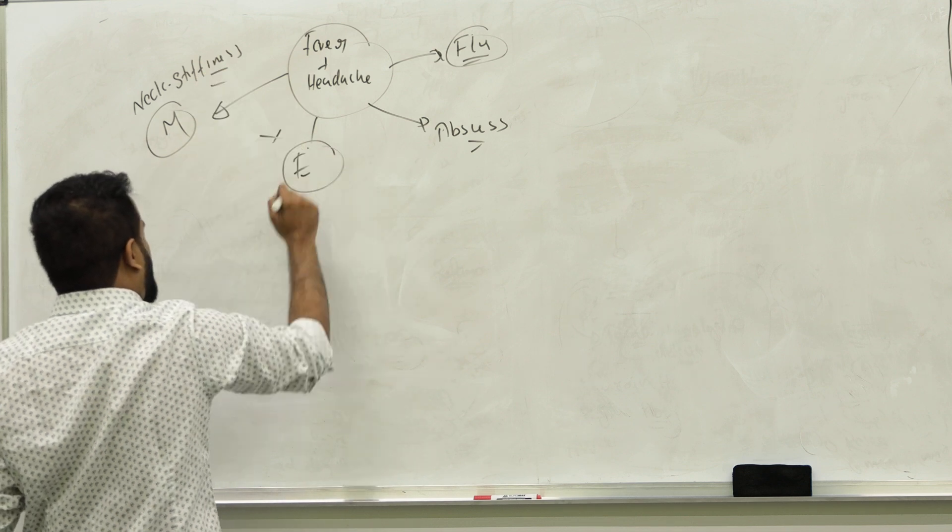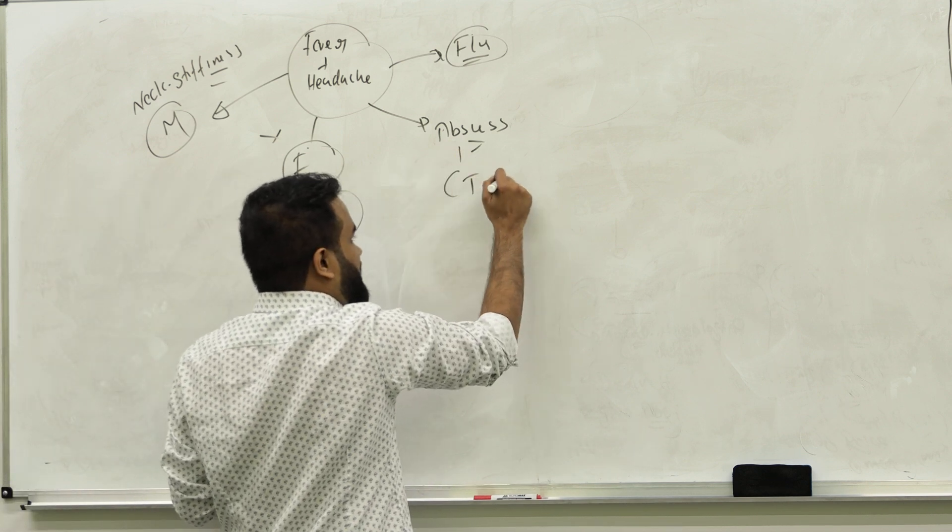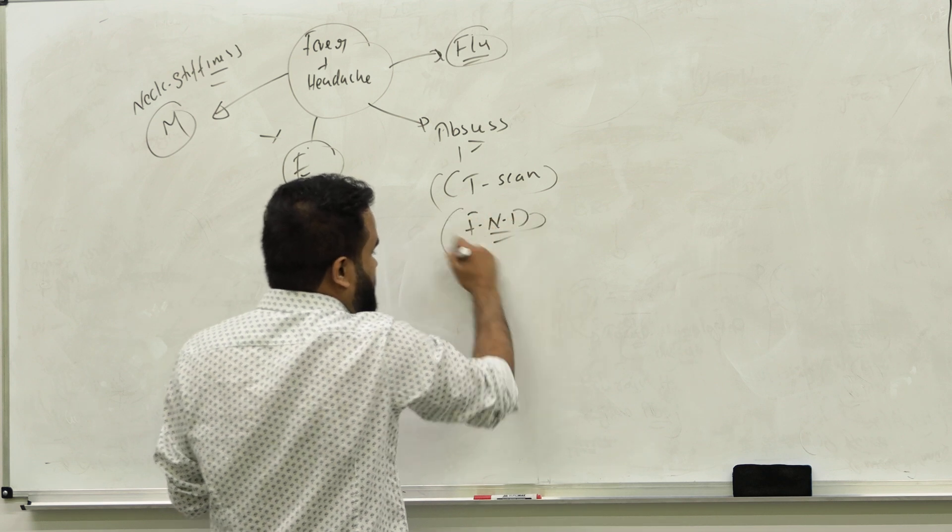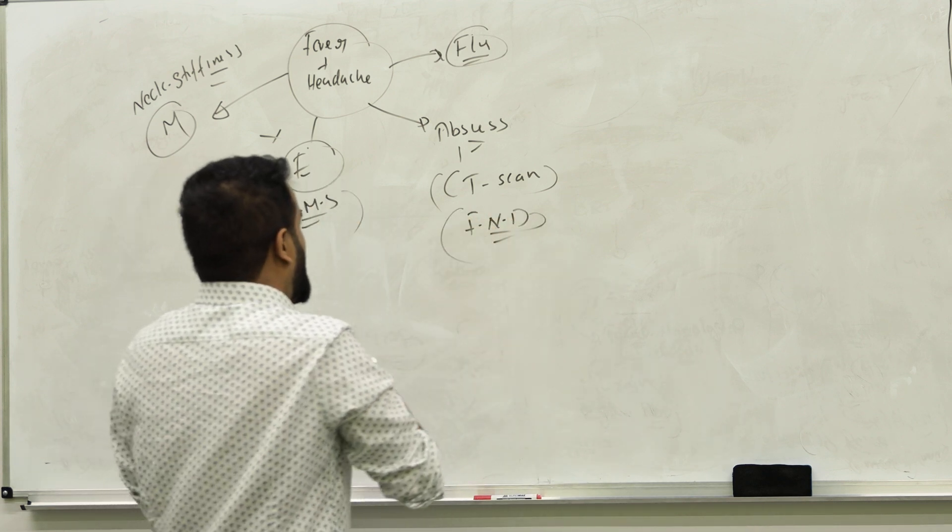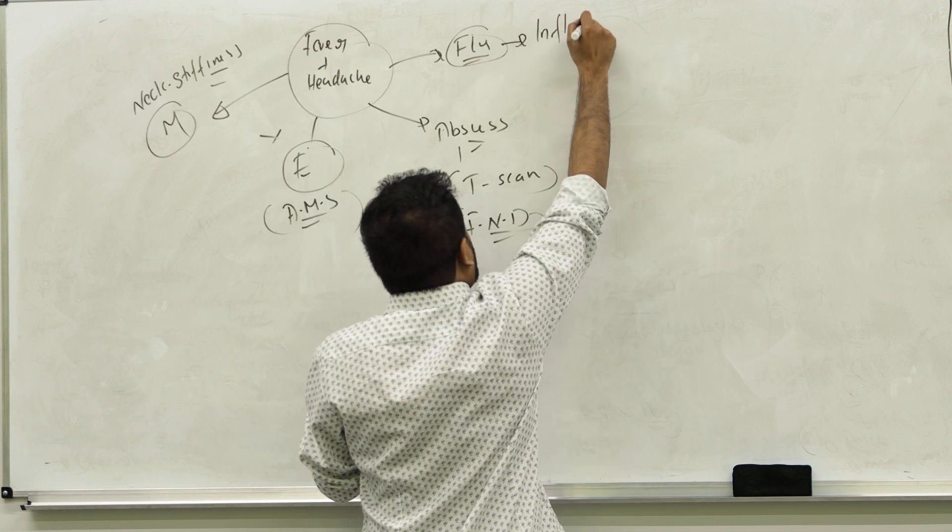If you see neck stiffness, for sure we are talking about meningitis. If you see encephalitis, there is no neck stiffness but you will have altered mental status. Abscess, you know on the CT you will see focal neurological deficit, new onset headache, toxoplasma or multiple abscesses.